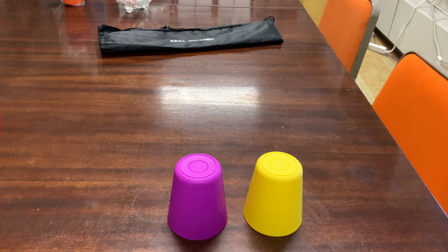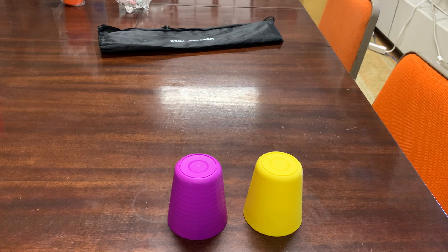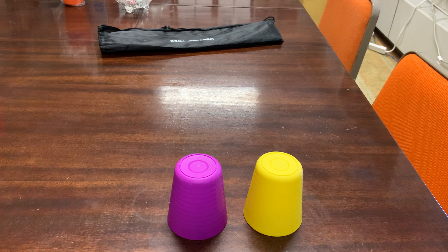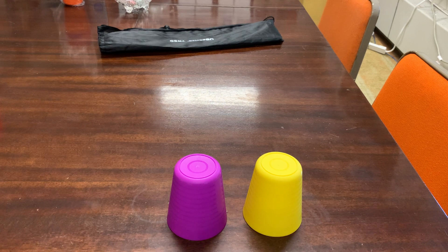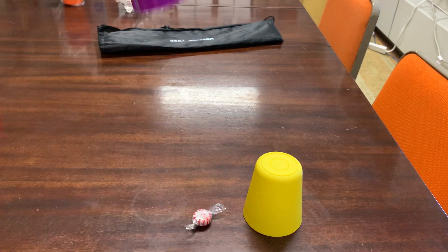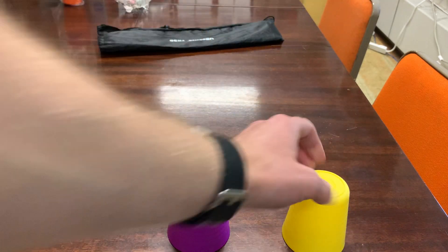So it starts off where you have two cups, in this case a purple one and a yellow one, and under one of the cups of course is a treat, which in this case is the purple cup. The yellow cup has no treat.